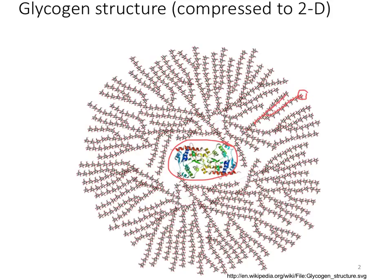These balls of glycogen are constantly growing when there's plenty of glucose around and insulin signaling, and shrinking when cells need more glucose, or in the case of the liver, when more glucose needs to be released to the blood.